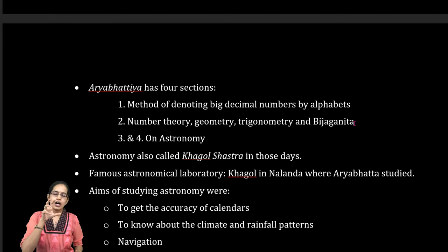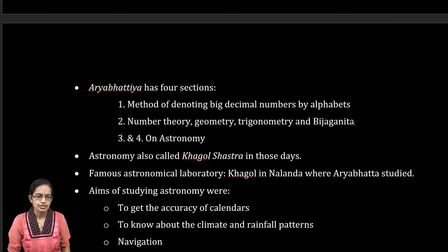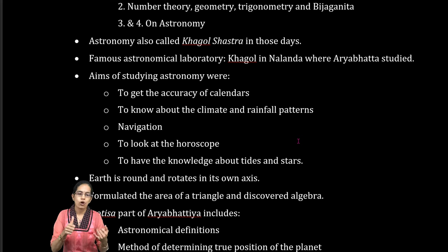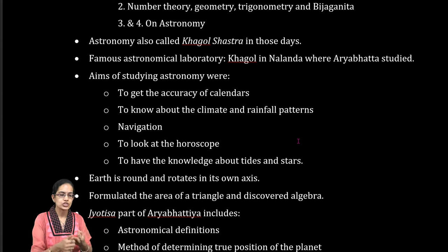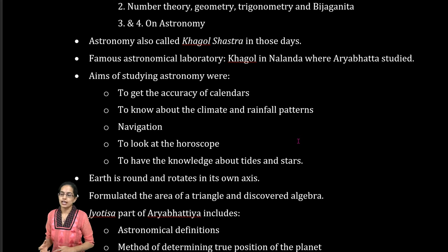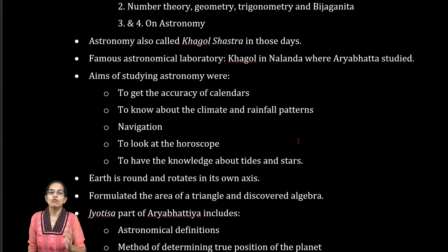Aryabhat developed a special astronomy center at Nalanda, which was known as the Khagol laboratory. Astronomy was one of the major developments, with two volumes dedicated to it. You had development of calendars with high accuracy, prediction of rainfall, climate change, navigation, horoscope development, and the movement of stars and tides. The Jyotish part of Aryabhatia focused on astronomical determinations, the position of earth and other planets, and the movement of the sun and moon.